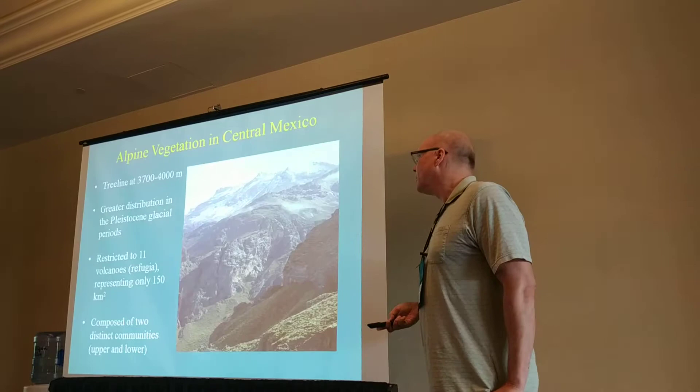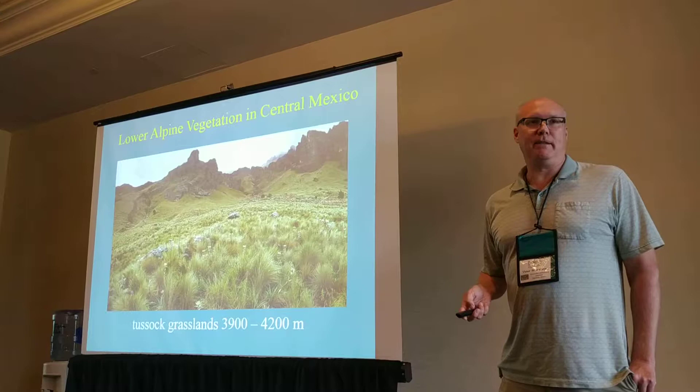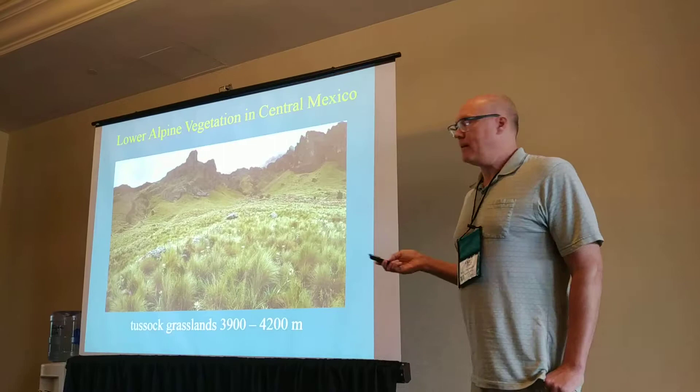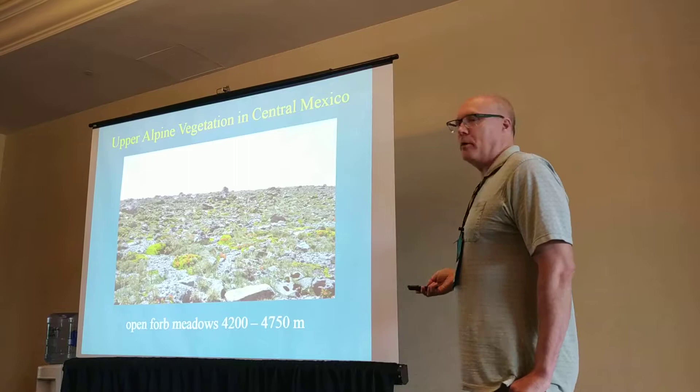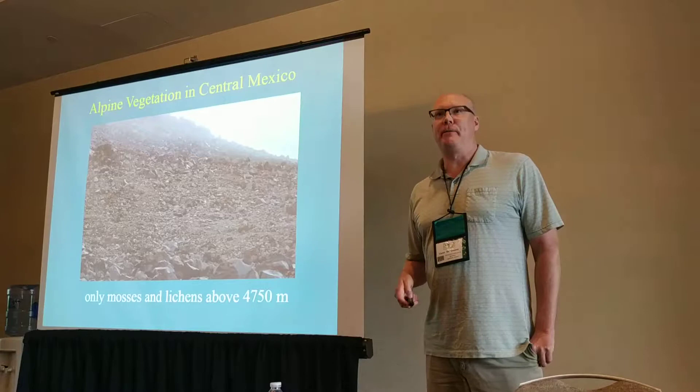The alpine vegetation is composed of two distinct communities. At lower elevations you have a tussock grassland usually dominated by Muhlenbergia, Festuca, and Calamagrostis — those three genera really dominate. As you get higher it becomes more of an open páramo, where other herbaceous plants become more common. And then at about 4,750 meters, vascular plants drop off, and for a couple hundred meters you have lichens and mosses, but it becomes very inhospitable.